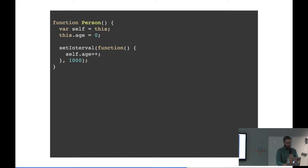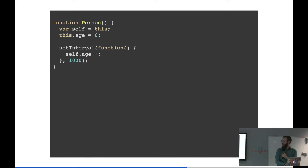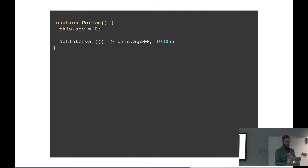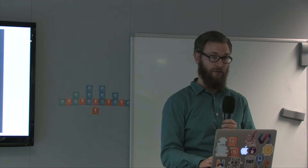But here's something else important. Say you have a function called person, and every second you want to increase this.age by one. You can do this in an interval, but you have to assign this to a variable because you need a new scope — a function is always a new scope. With arrow functions, you inherit the scope. You inherit 'this' as well. So you can do it like this — 'this' stays the same as the outer scope, so you don't have to assign a new variable to it. It's very handy when you use a lot of event handlers where you constantly need to go to the parent scope.